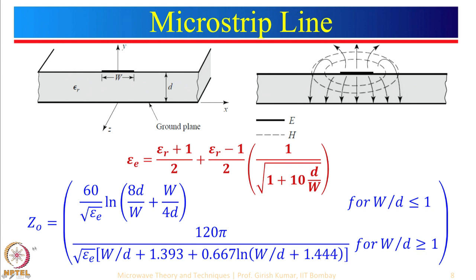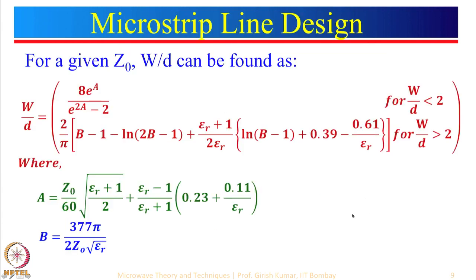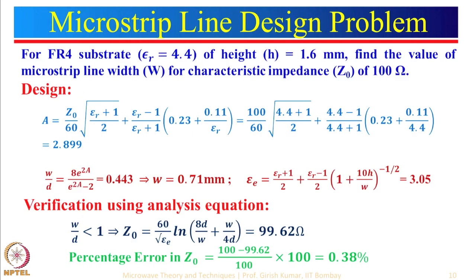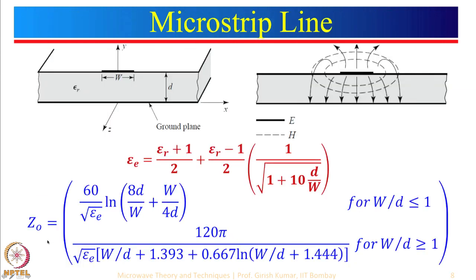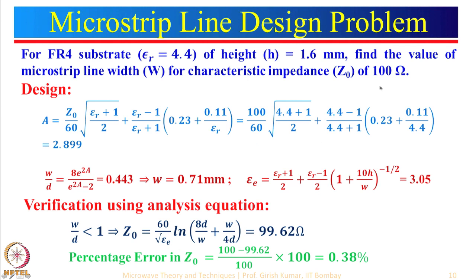For a given value of w, one can find the characteristic impedance — this is an analysis equation. Then we looked at the design problem where Z0 is given and we need to find w/d or w/h. We took one design problem: for a particular substrate and characteristic impedance of 100 ohm, we found w = 0.71 mm and εeff = 3.05, which is less than 4.4. We verified this using the analysis equation and saw that the percentage error is relatively very small.